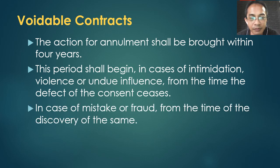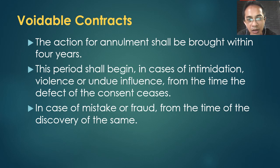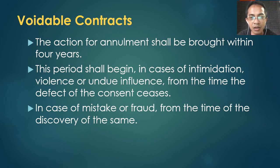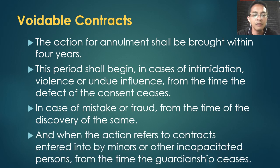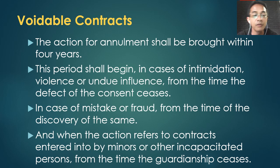Do not just say 'within four years' — you must specify from what event the four years runs. In case of intimidation, violence, or undue influence: four years from the time the defect of consent ceases. In case of mistake or fraud: four years from the time of discovery. When the action refers to contracts entered by minors or incapacitated persons: four years from the time the guardianship ceases or the minor becomes capacitated.